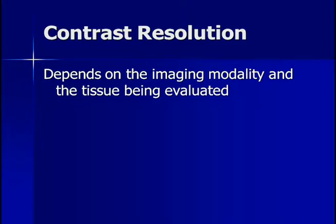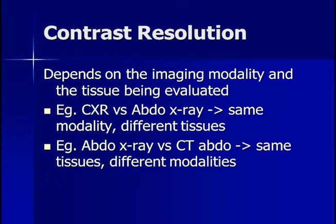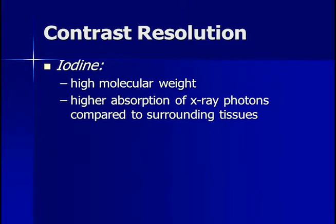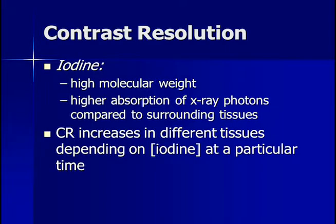Contrast resolution depends on the imaging modality and the tissue being evaluated. For example, a chest x-ray and an abdominal x-ray use the same modality, but the tissues have different intrinsic contrast resolution, which is why the images appear different. On the other hand, comparing an abdominal x-ray to an abdominal CT scan uses the same tissue but different modalities, which allow differences in contrast. Iodine is the compound found within CT scan contrast agents, and it has a high molecular weight compared to carbon, nitrogen, and oxygen found in most tissues, resulting in higher absorption of x-ray photons compared to surrounding tissues.